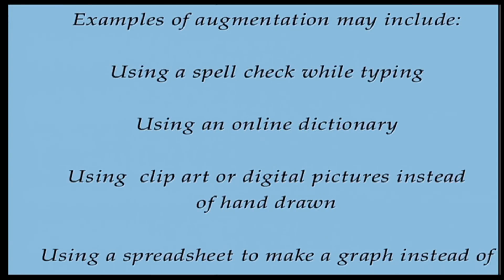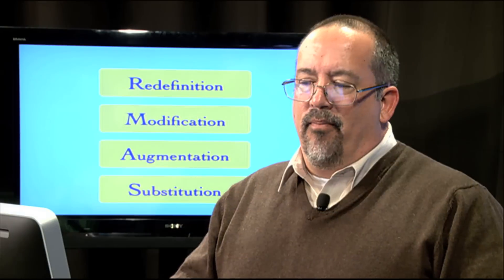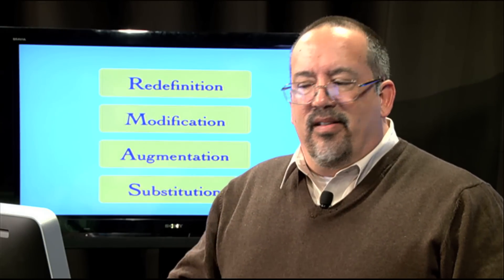We're not changing the assignment in any way. We're merely enhancing the assignment just a little bit. We might use a spreadsheet to make a graph instead of just hand drawing that graph. This is augmentation, the second step in the SAMR model.